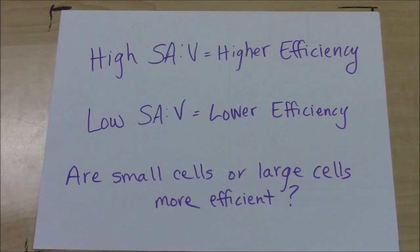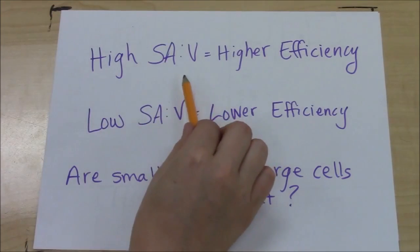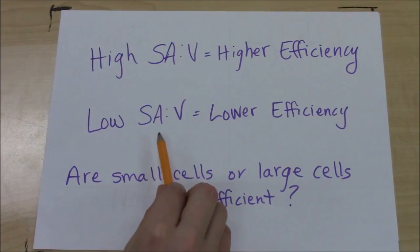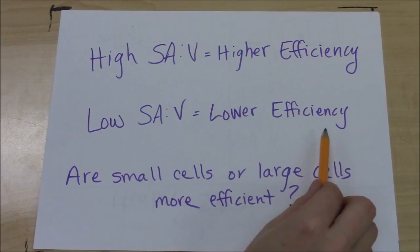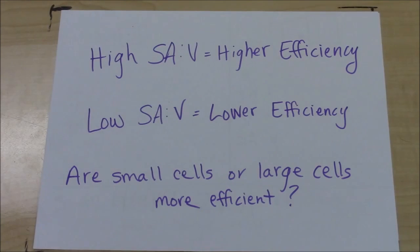Here is a way to think about and determine the efficiency. We had that number six to one. A cell with a high surface area to volume ratio is going to be more efficient, and if it has a low surface area to volume ratio, it's going to be less efficient. So our question becomes: are small cells or large cells more efficient? Let's use surface area to volume ratio to figure that out.